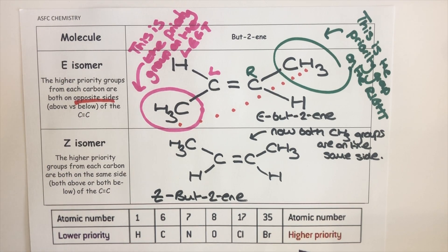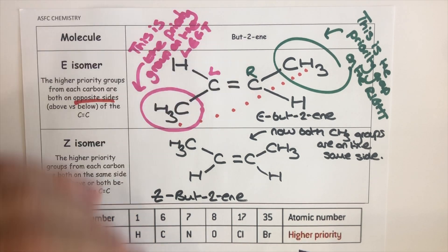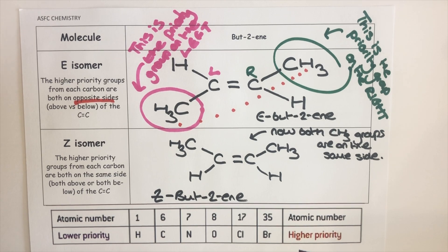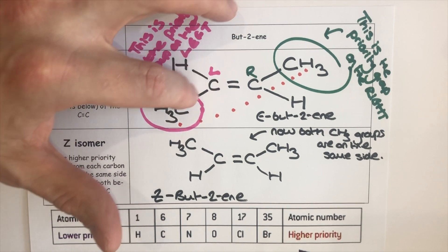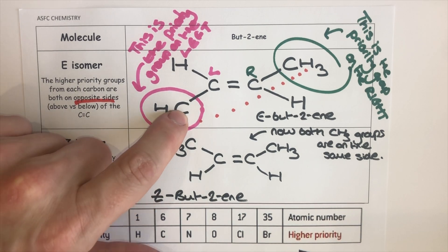With EZ isomerism, we go to each carbon one at a time in the double bond and assign a high priority group to each. For the left-hand carbon, I've allocated CH3 as the high priority group. The reason is I used the atomic number of the immediate atom connected to the carbon in the double bond — another carbon with atomic number 6 — versus the alternative hydrogen with atomic number 1. So the CH3 group is the high priority group because of that initial atom's higher atomic number.